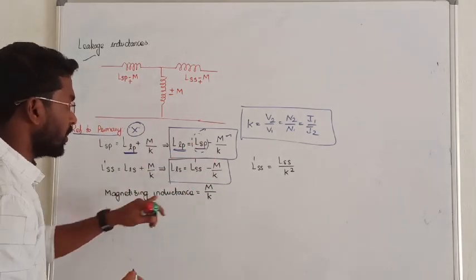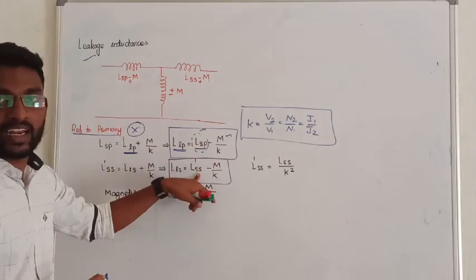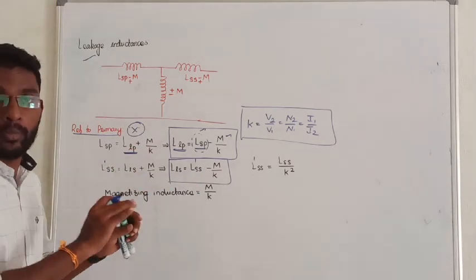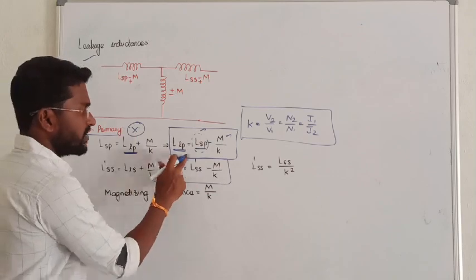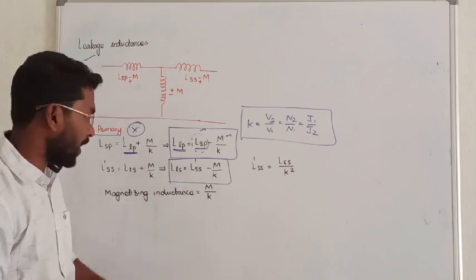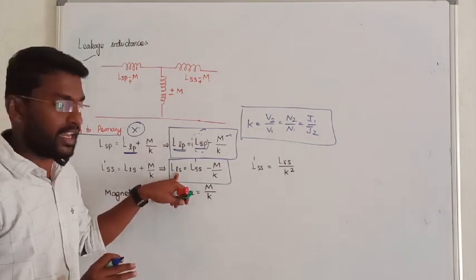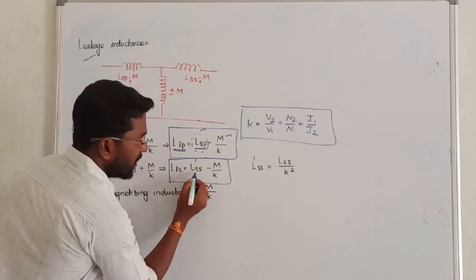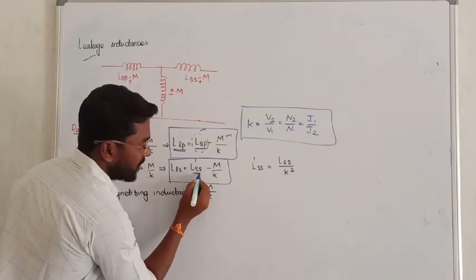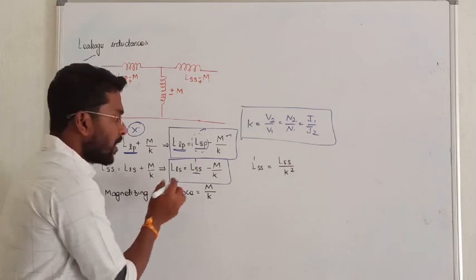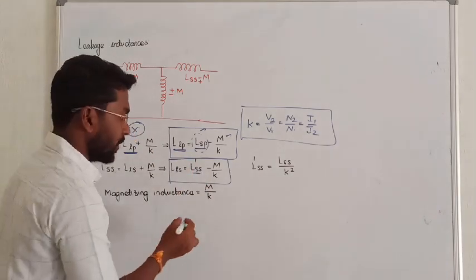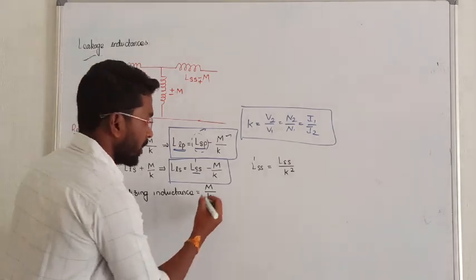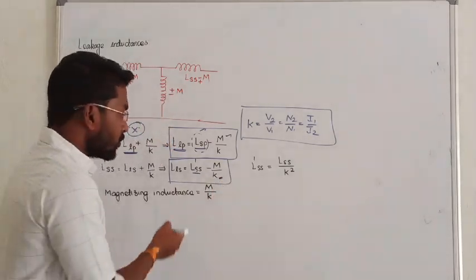Similarly, the leakage inductance offered by the transformer referred to primary from the secondary side uses the same approach. The leakage inductance at the secondary side equals self inductance offered by the transformer at the secondary side minus mutual inductance offered by the transformer, divided by the turns ratio.